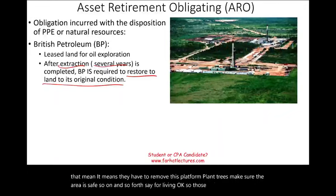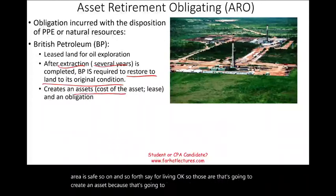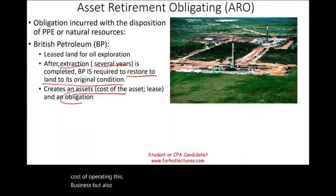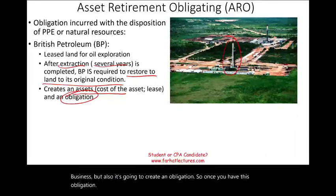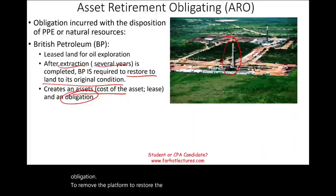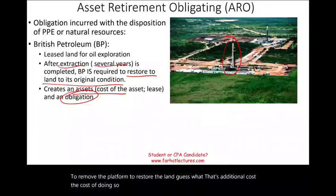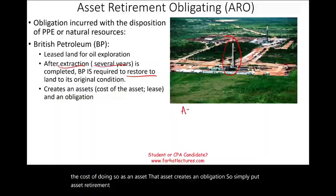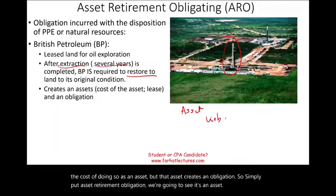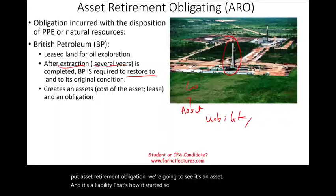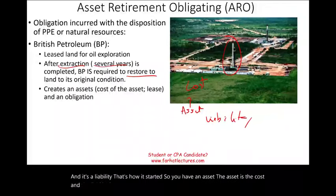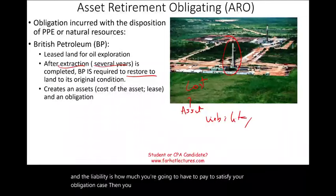That obligation to remove the platform and restore the land creates an additional cost to the business — and that cost is an asset, but it also creates an obligation. Simply put, an asset retirement obligation is both an asset and a liability. The asset is the cost, and the liability is how much you'll have to pay to satisfy your obligation. Once you see a worked example, it will make more sense.